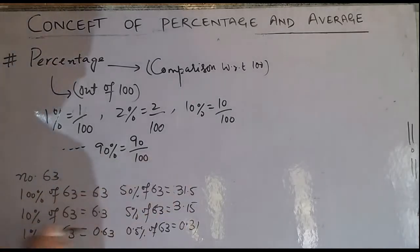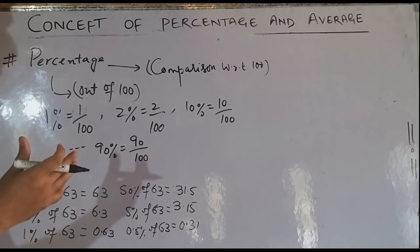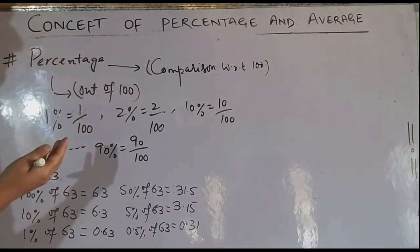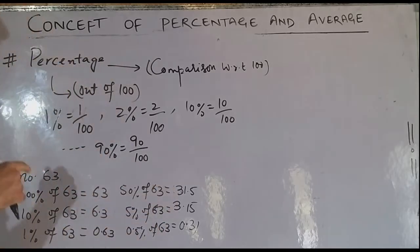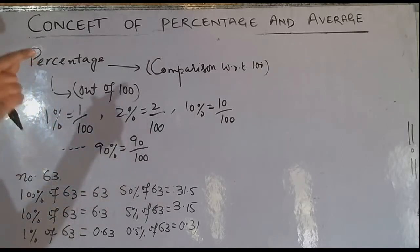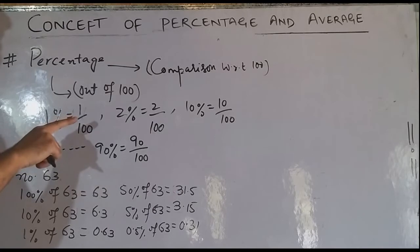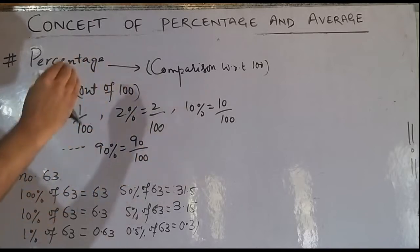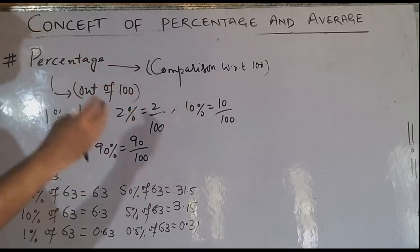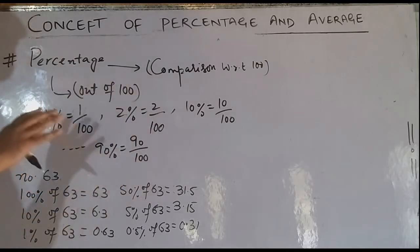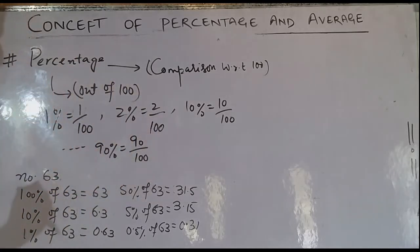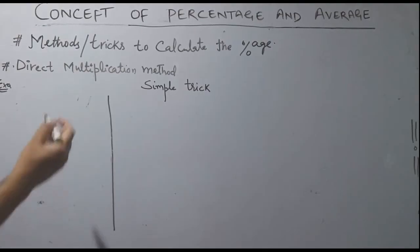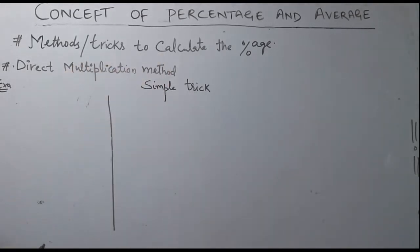So what we have discussed is that we have different methods to calculate percentages. We have the split method — for example, 60% of any number can be computed as 50% plus 10%. You should know 50% of the number and 10% of the number and add them. Friends, let's look at different methods and tricks you can use to calculate percentages.